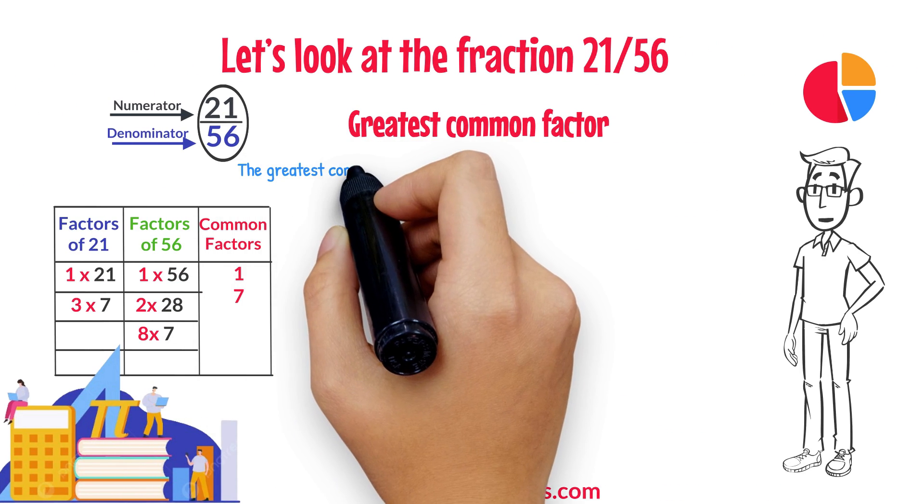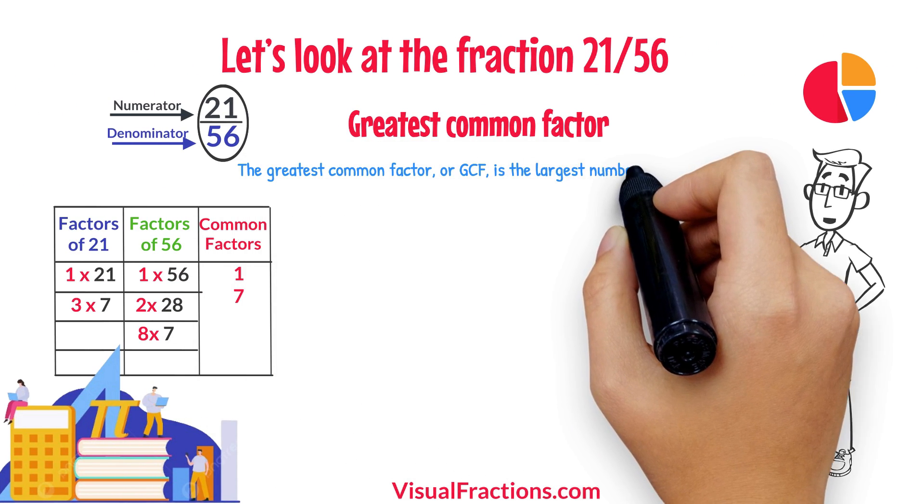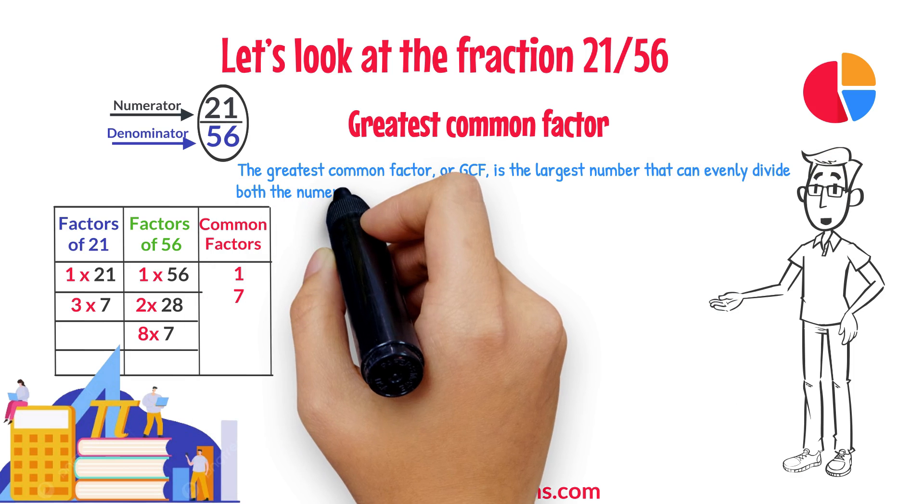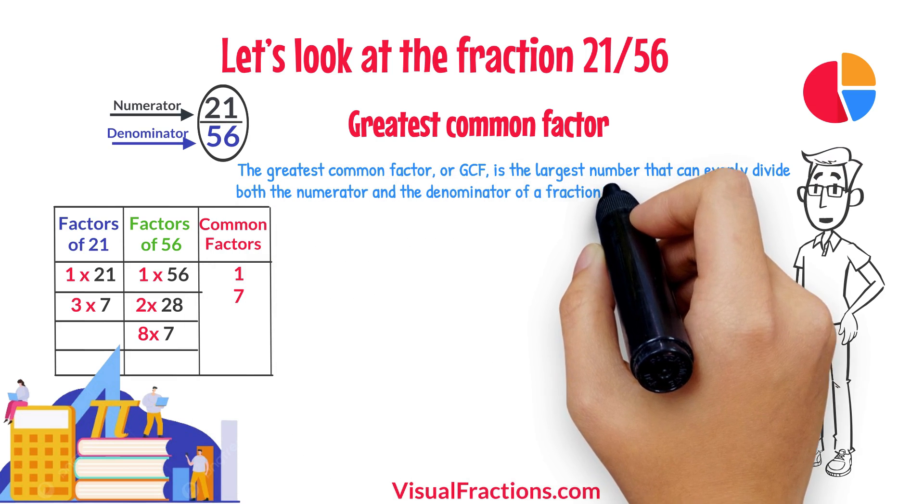The greatest common factor, or GCF, is the largest number that can evenly divide both the numerator and the denominator of a fraction without leaving a remainder.